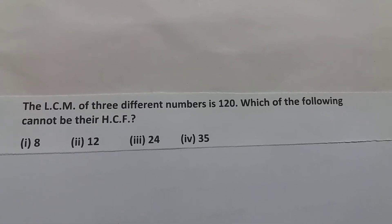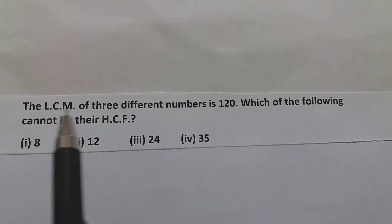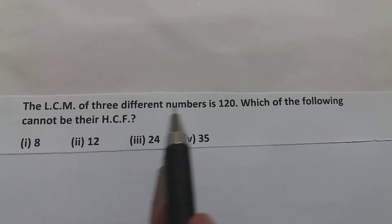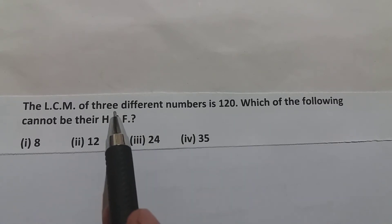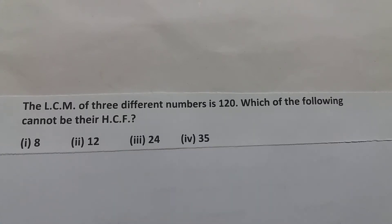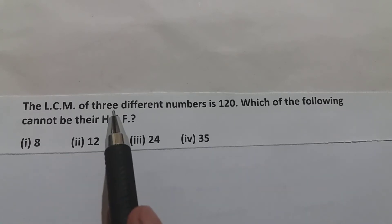Welcome. The question says: the LCM of three different numbers is 120. Which of the following cannot be their HCF? They have given us four options. There are three different numbers whose lowest common multiple is 120, and we have to find which of the four options cannot be the HCF of those three different numbers.